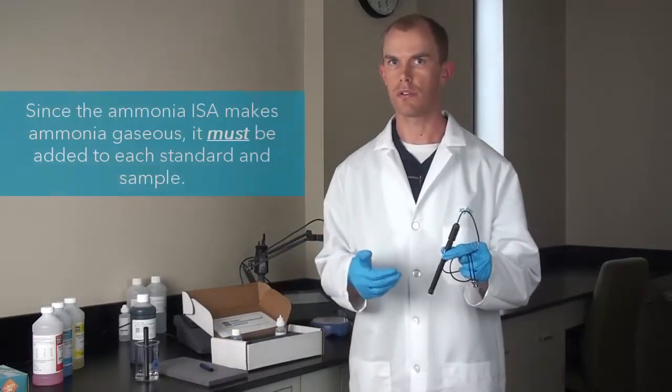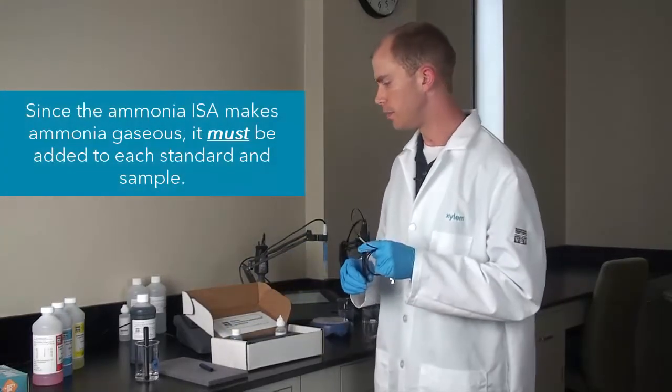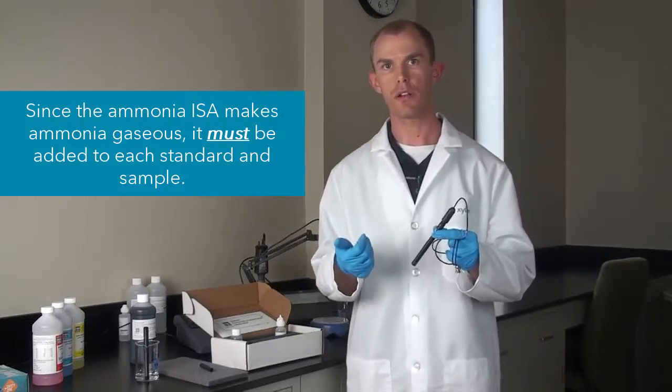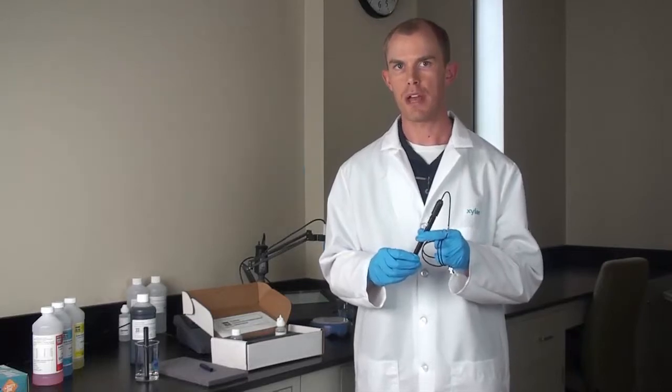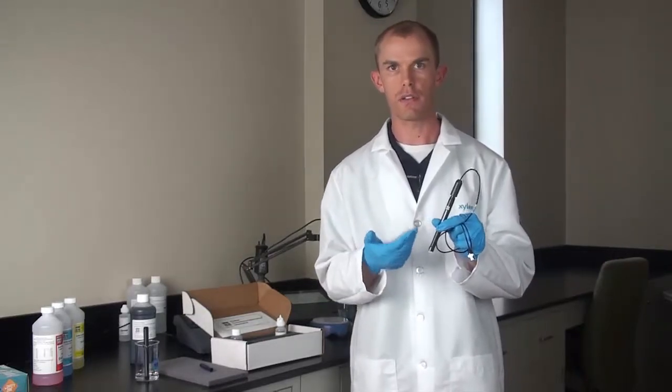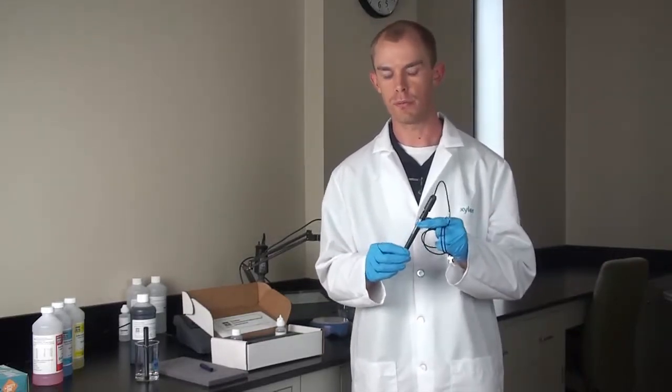This ISA, when you put it in your standard or sample, will buffer your sample to a pH greater than 11. That causes the ammonia in the sample to become gaseous, which then allows it to permeate through this permeable membrane.